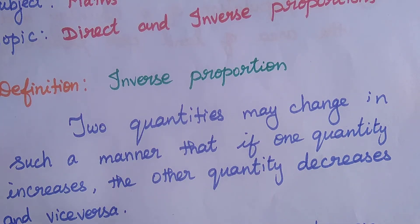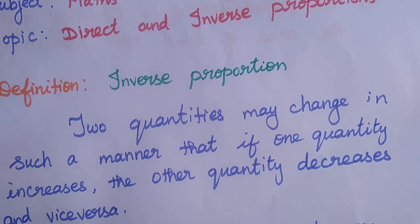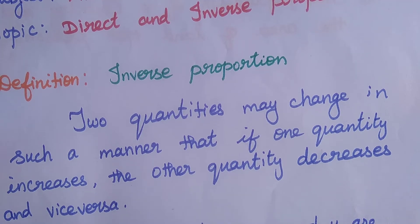For example, take a two-wheeler vehicle. If we increase the speed, time will reduce. So that is called inverse proportion. There are so many examples of that.